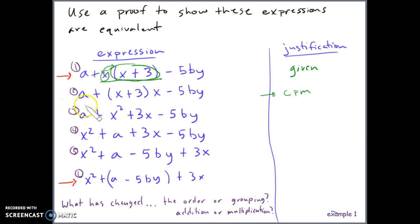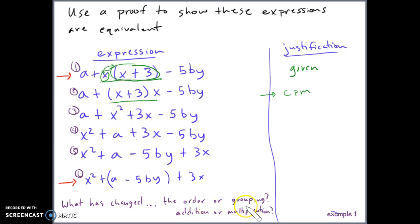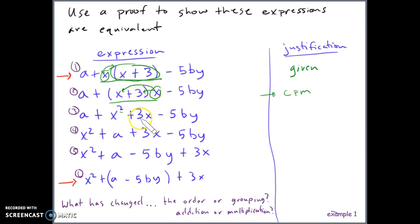From expression 2 to 3, we go from a plus (x plus 3) times x to a plus x² plus 3x minus 5b. The change: (x plus 3) times x became x² plus 3x. The order didn't change and the grouping didn't change — instead, the x outside was multiplied through the parentheses using the distributive property. x times x gives x², and 3 times x gives 3x. So the justification is the distributive property.